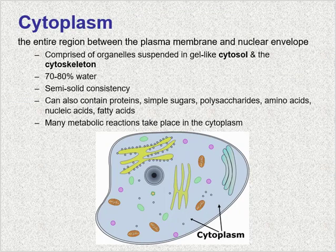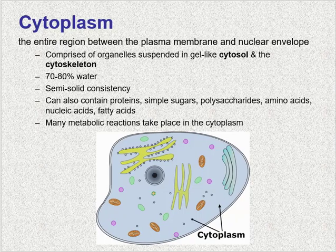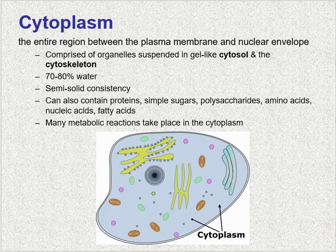Now we're going to cover the different types of organelles and substances found in cells. The cytoplasm is the cell's entire region between the plasma membrane and the nuclear envelope. It is composed of organelles suspended in the gel-like cytosol, the cytoskeleton, and various other chemicals. It consists of about 70 to 80% water but has a semi-solid consistency because of the proteins suspended within it. There may also be many other types of molecules within the cytoplasm such as glucose, polysaccharides, amino acids, nucleic acids, fatty acids, and ions of sodium, potassium, calcium, and many other elements. Many metabolic reactions take place in the cytoplasm, including protein synthesis.